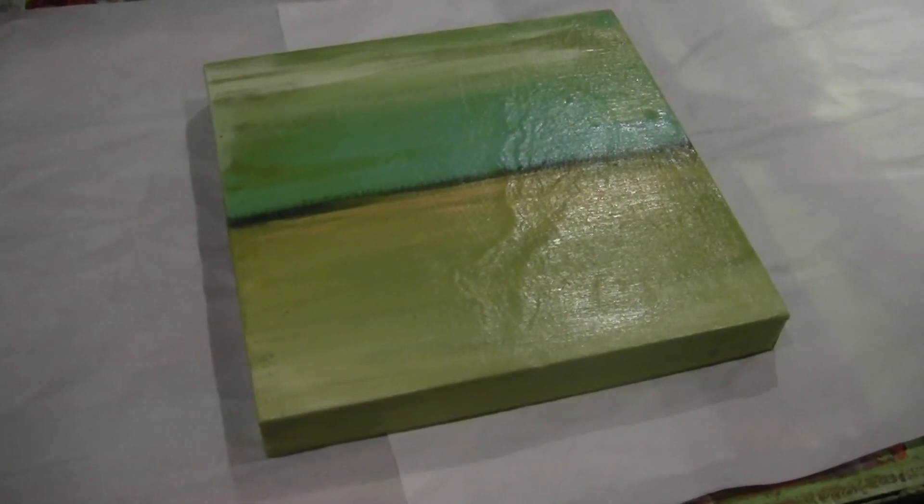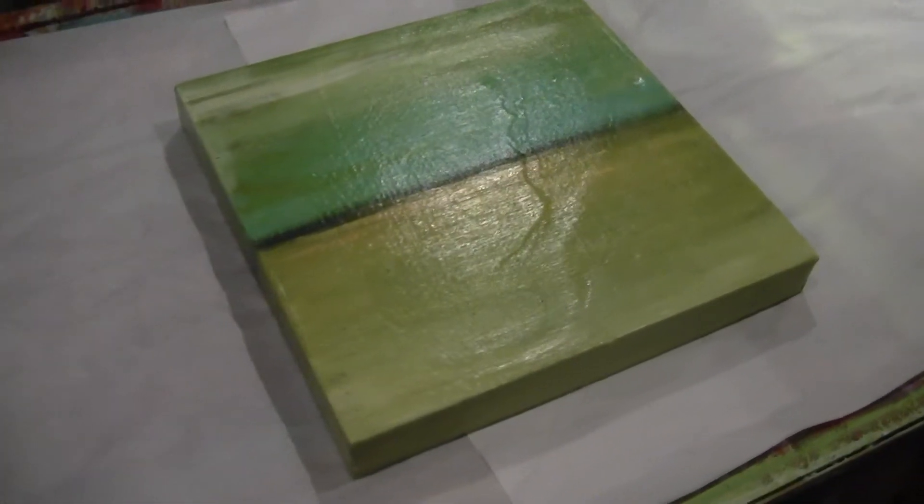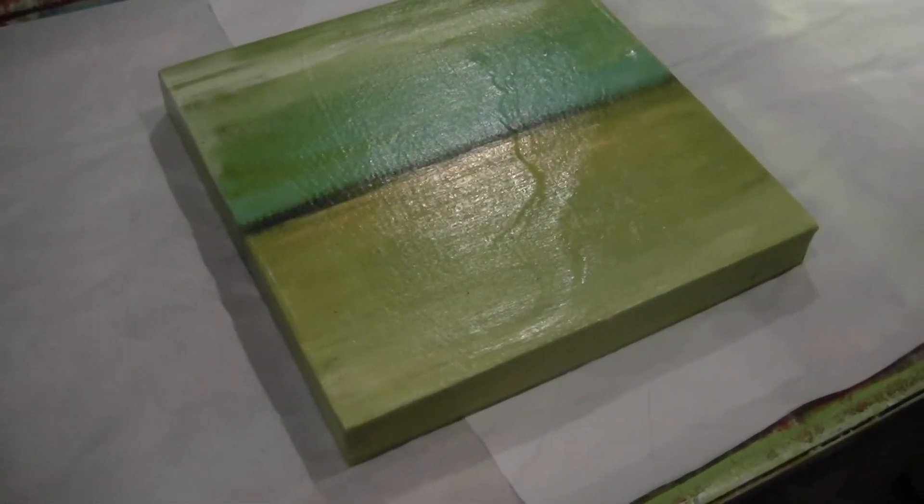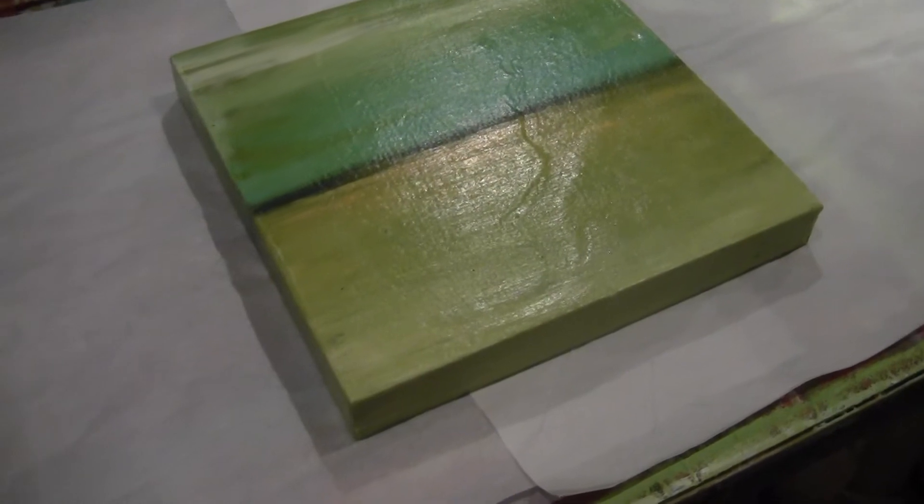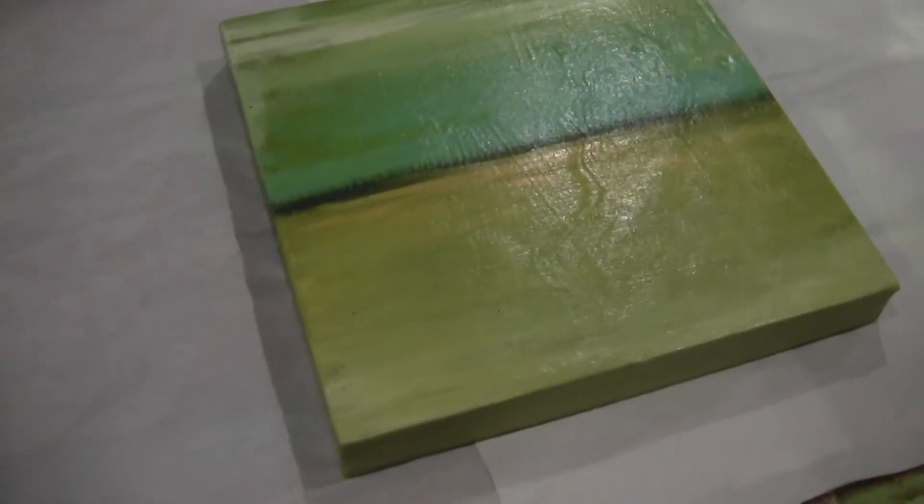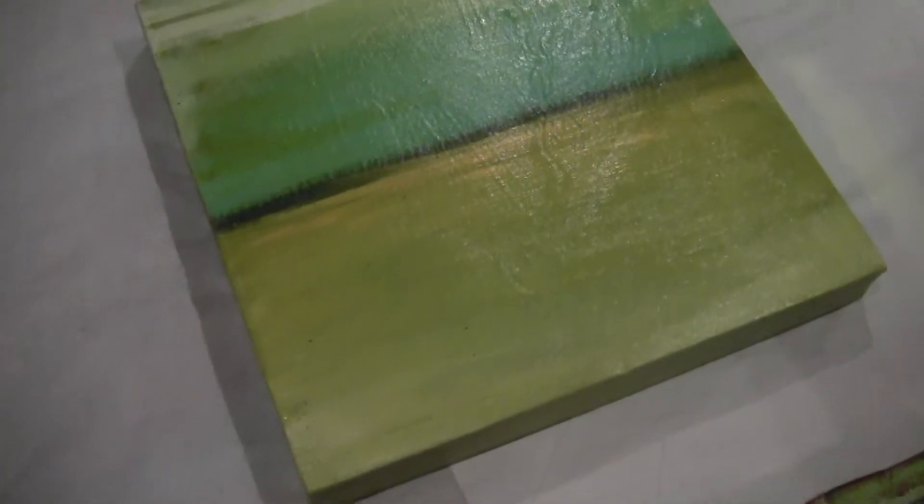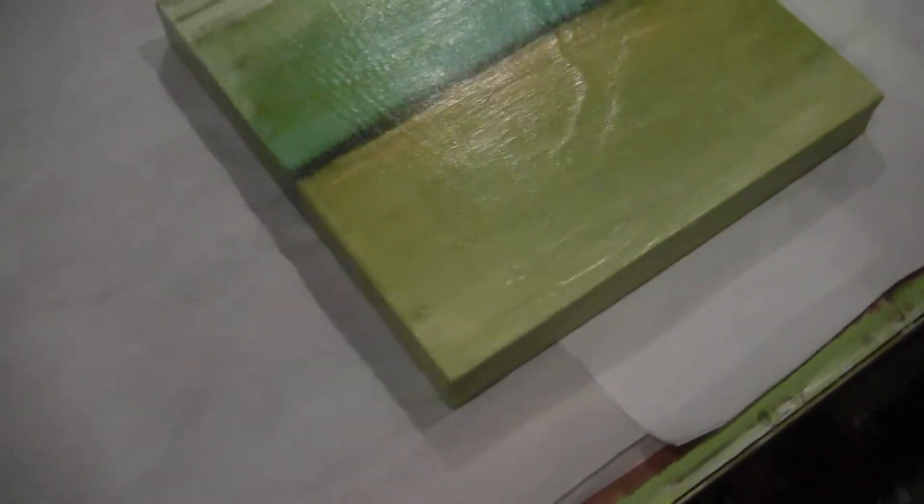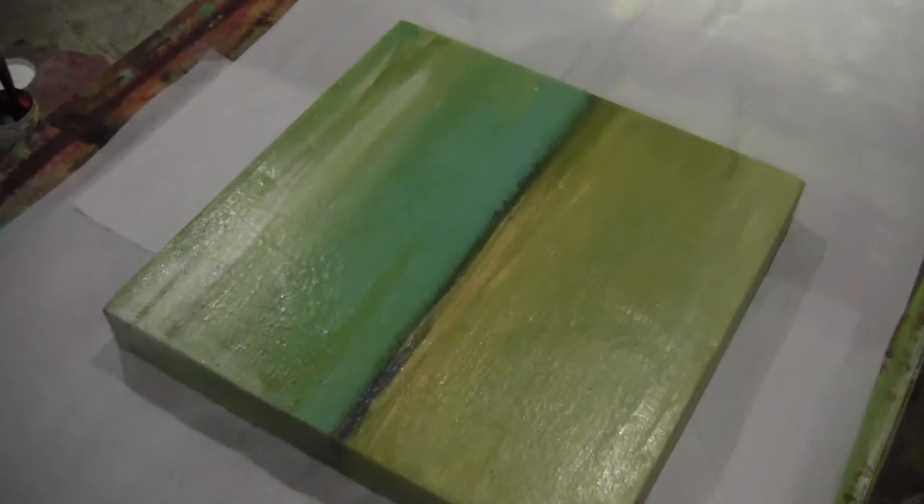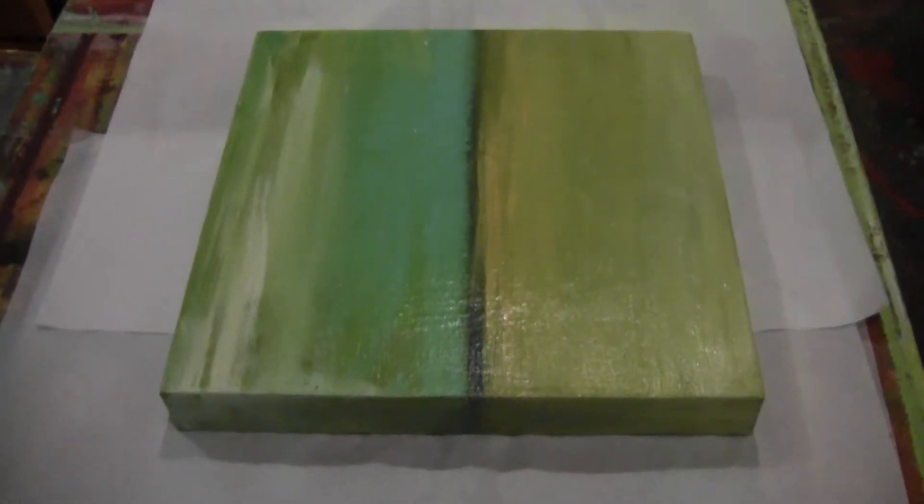For about two to three days, then applied gesso all over it a few times and then painted it with these light green colors with some use of gold as well.